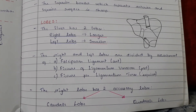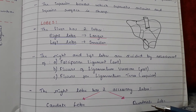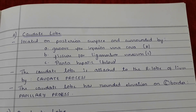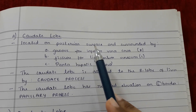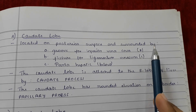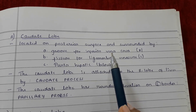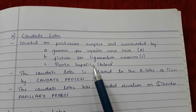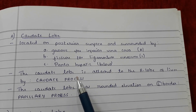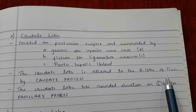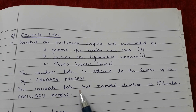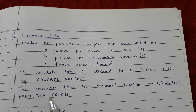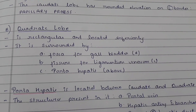The right lobe has two accessory lobes: the caudate lobe and the quadrate lobe. The caudate lobe is located on the posterior surface and is surrounded by the groove for the inferior vena cava on the right side, the fissure for the ligamentum venosum on the left side, and porta hepatis below. The caudate lobe is attached to the right lobe by the caudate process and has a rounded elevation on its left border called the papillary process.